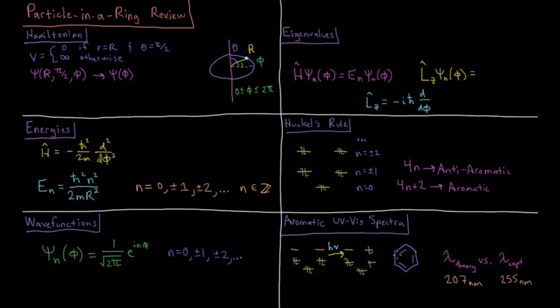When we calculate the difference between what theory predicts for the particle in a ring model system for benzene, which is a very simple model for benzene, versus the experimental value, we get something that's on the same order of magnitude. So we get 207 nanometers for the wavelength of light versus 255 for that ultraviolet absorption.